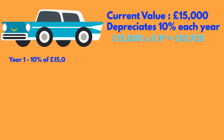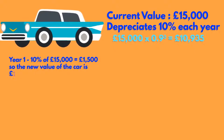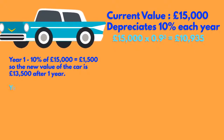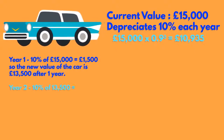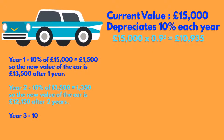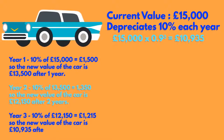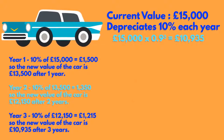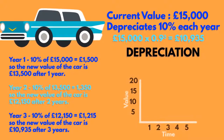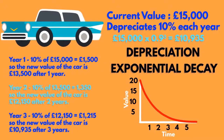After the first year, the value of the car is £13,500. At the end of the second year, it's down to £12,150. By the end of the third year, it has come down to £10,935. This is depreciation and is an example of exponential decay.